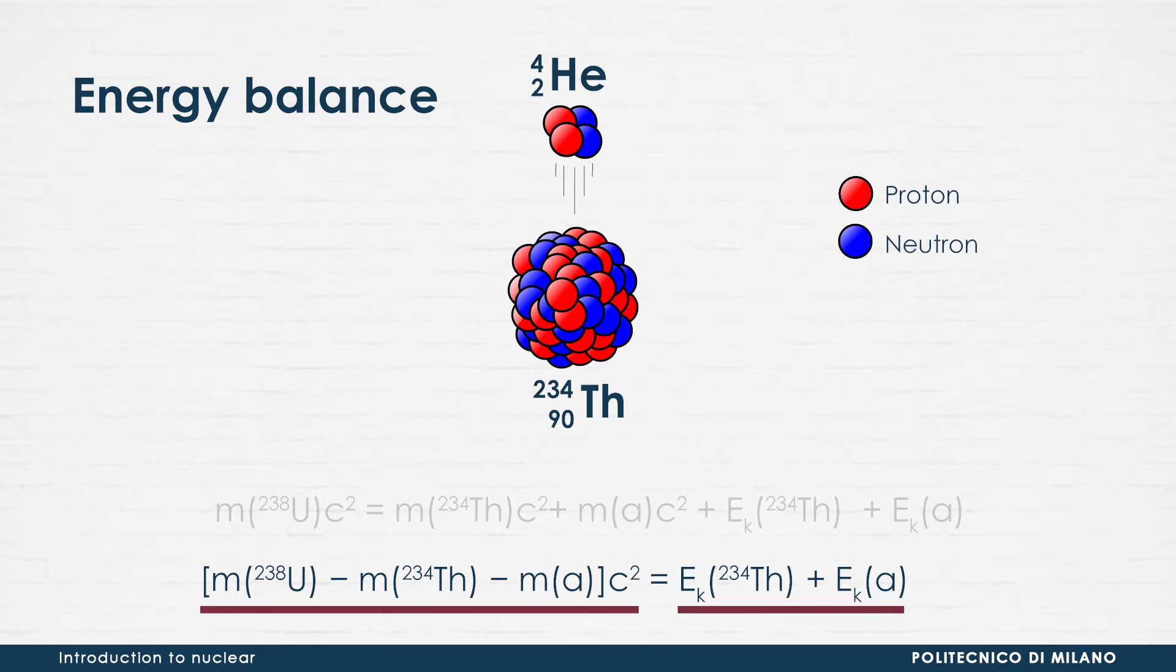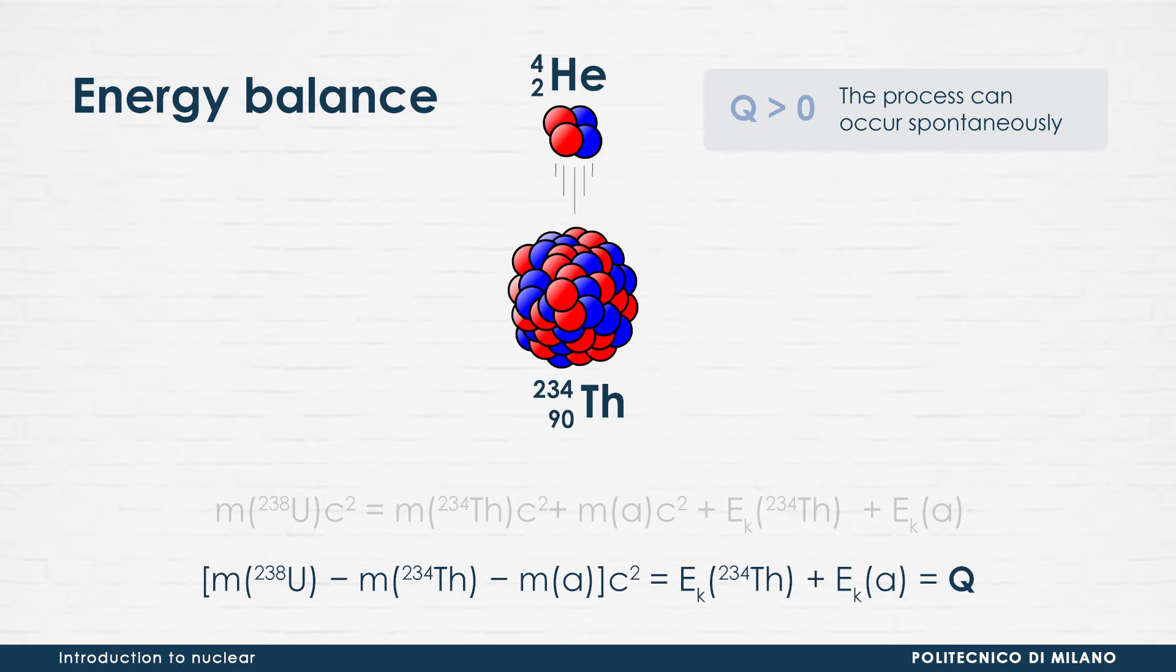Both members define the so-called Q-value of the process, a quantity that represents the amount of energy available for the transformation. A positive Q-value means that the process can occur spontaneously.